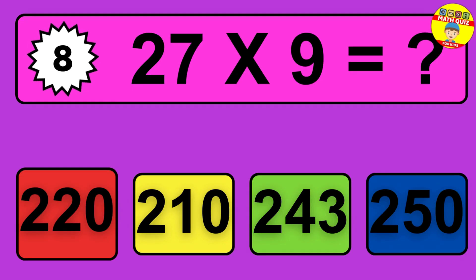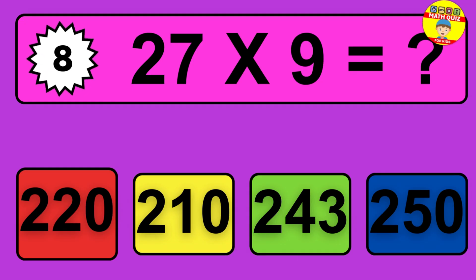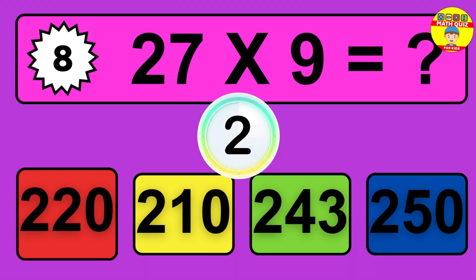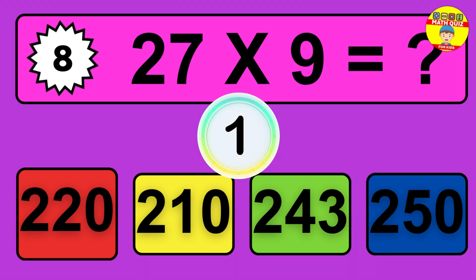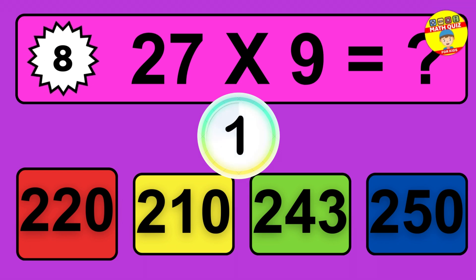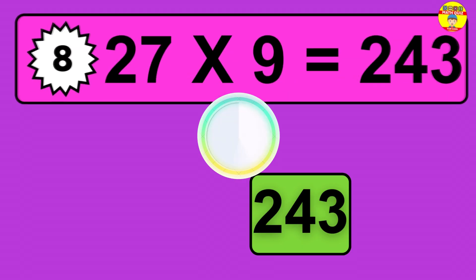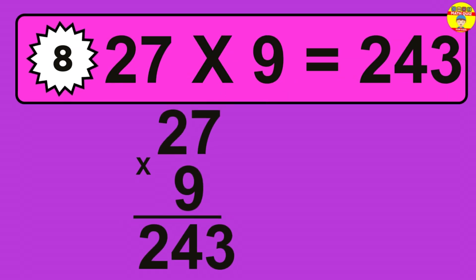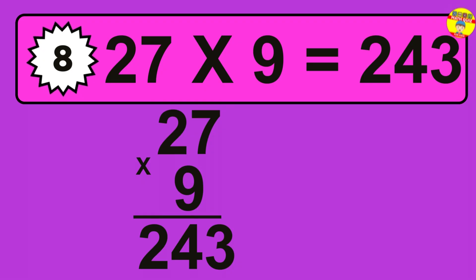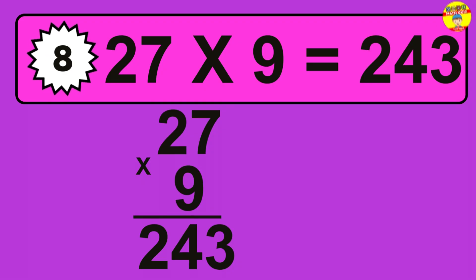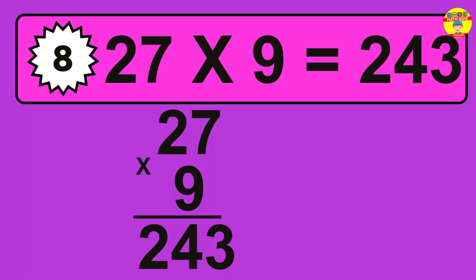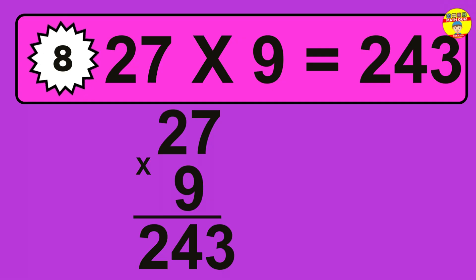Question 8. 27 times 9 equals what? The answer is 27 times 9 is 243. To calculate, we have 27 groups with 9 balls each one. So, how many balls do we have? 243 balls.